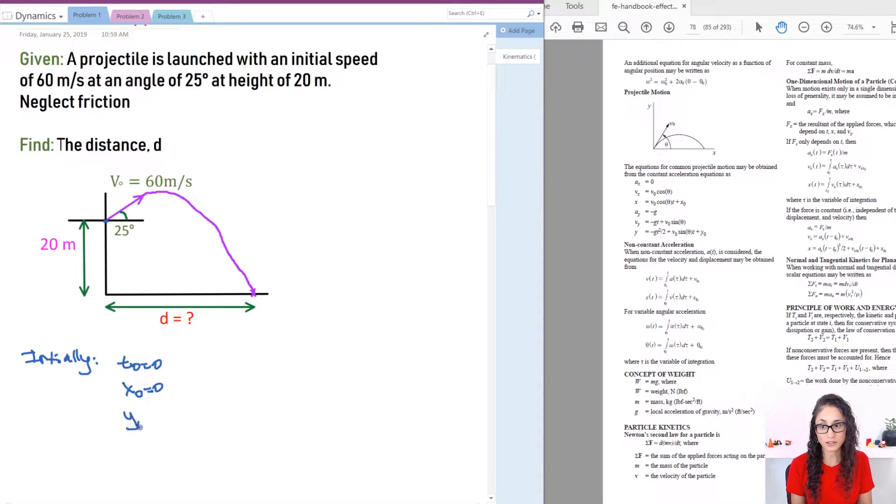My y0 is 20 because this is where we're starting. This is my coordinate 0, but we are at 20 meters high. So that's my y0. My y0 is 20 meters and your y final is 0 because it's going to land to 0.